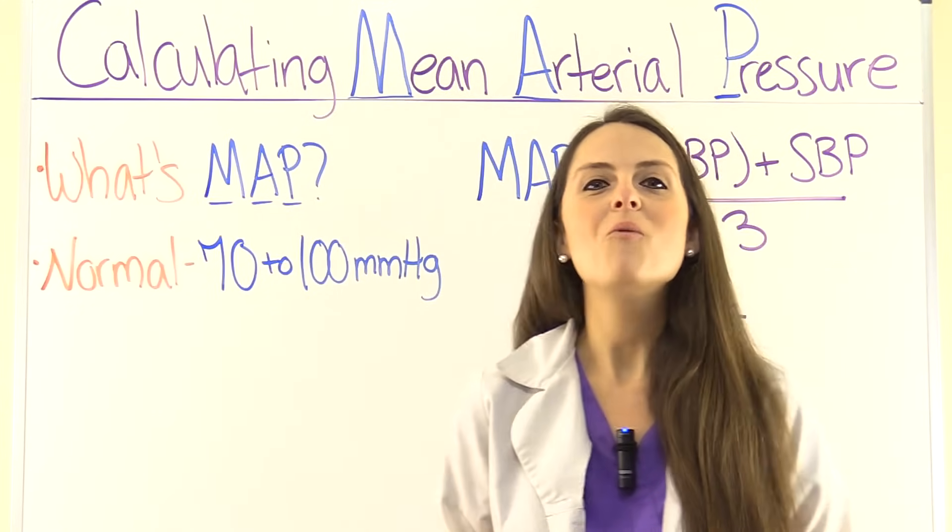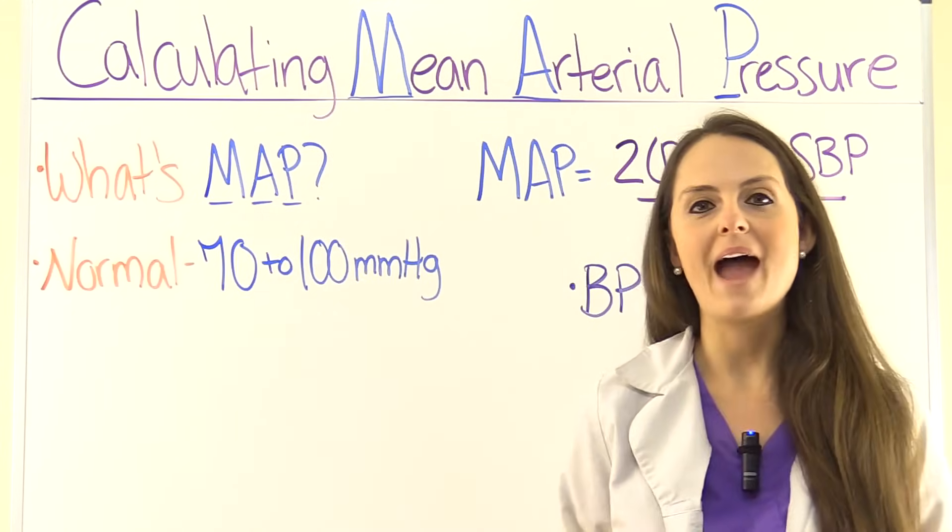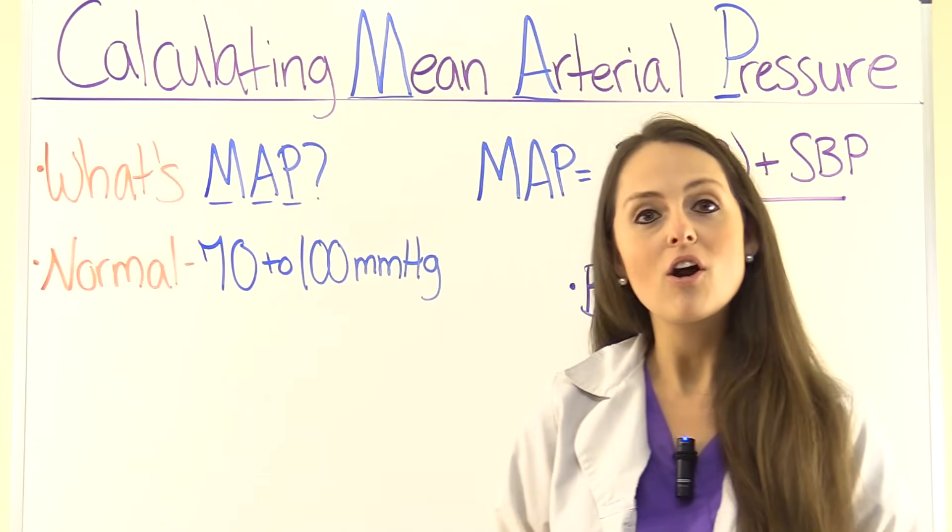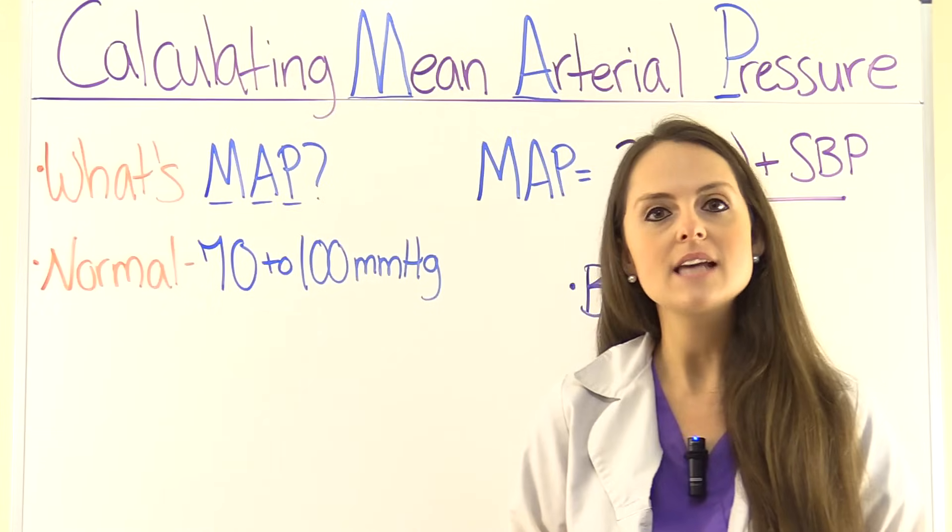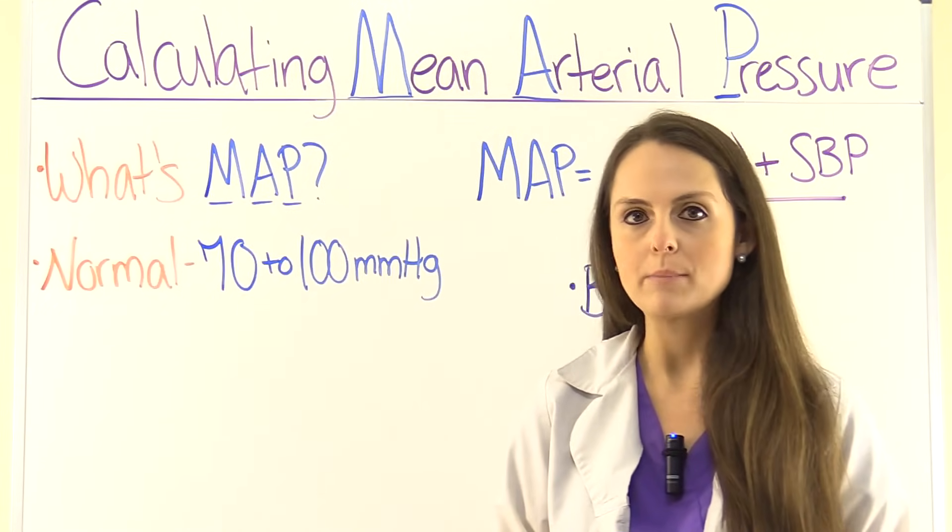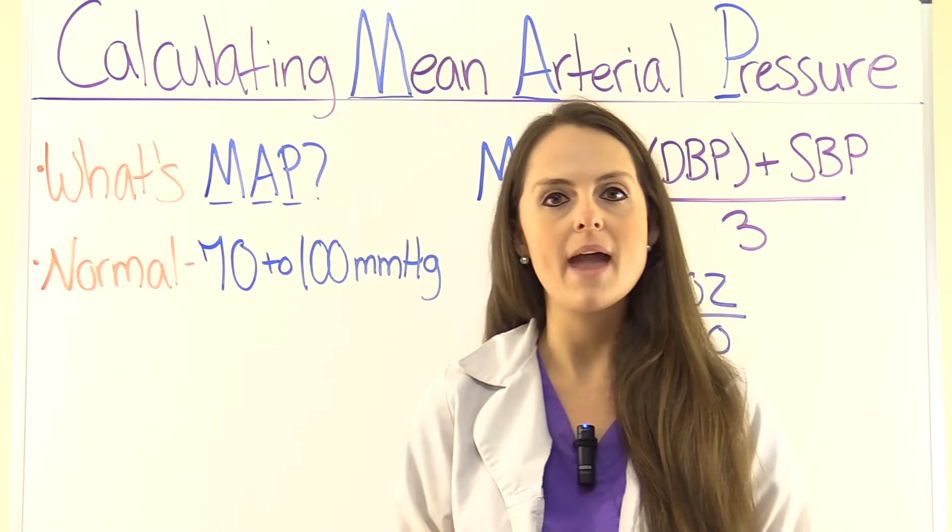First, let's start out talking about what is the mean arterial pressure, the MAP. It is the pressure in our arteries during one cardiac cycle. And it tells us how well our vital organs are being perfused, like our renal system and brain.